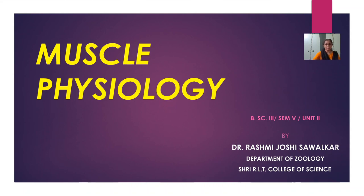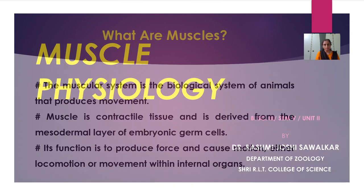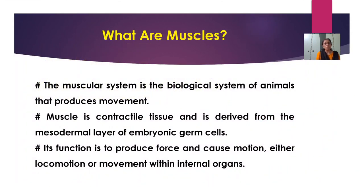Now, what are muscles? The muscular system is the biological system of animals that produces movements. Muscle is contractile tissue and is derived from the mesodermal layer of embryonic germ cells. Its function is to produce force and cause motion — either locomotion or movement within internal organs.